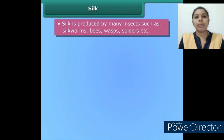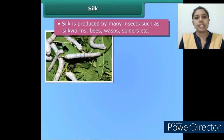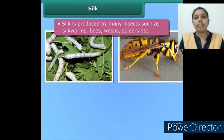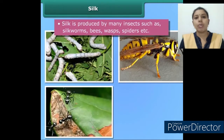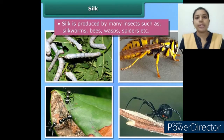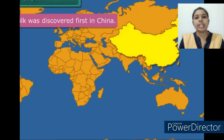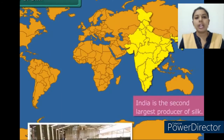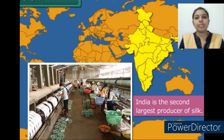Silk is produced by insects such as silkworms, bees, wasps, spiders, etc. But silk produced by silkworms only is processed into silk fabrics. Silk was discovered first in China. Today, India is the second largest producer of silk.